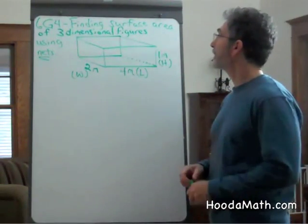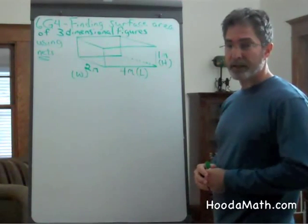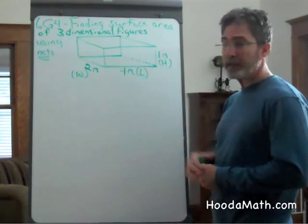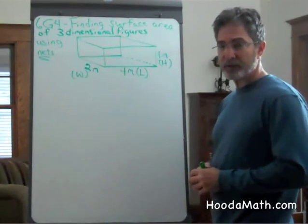Finding the surface area of three-dimensional figures using nets. A rectangular prism is a three-dimensional figure. It has six faces.